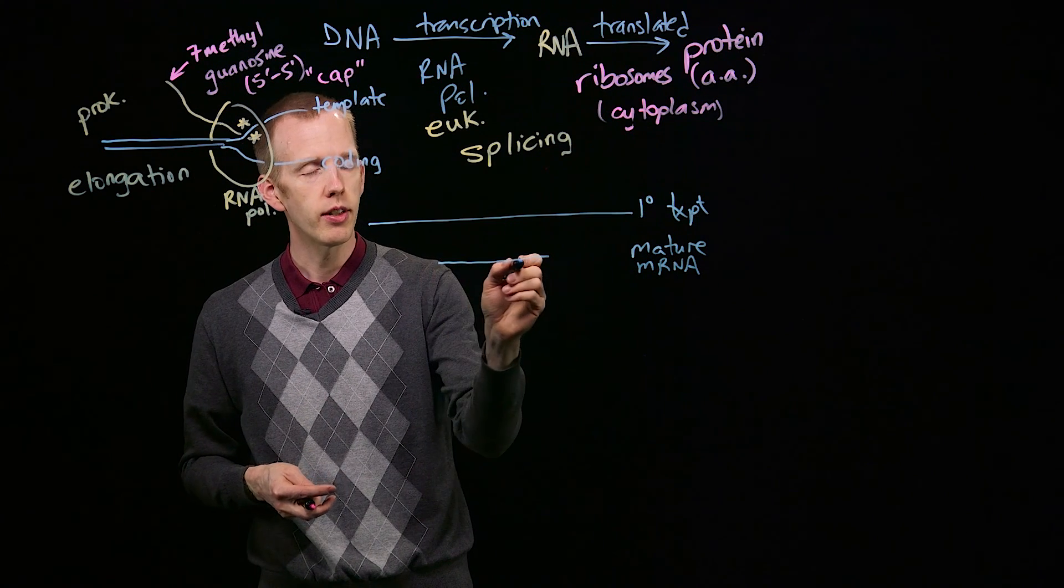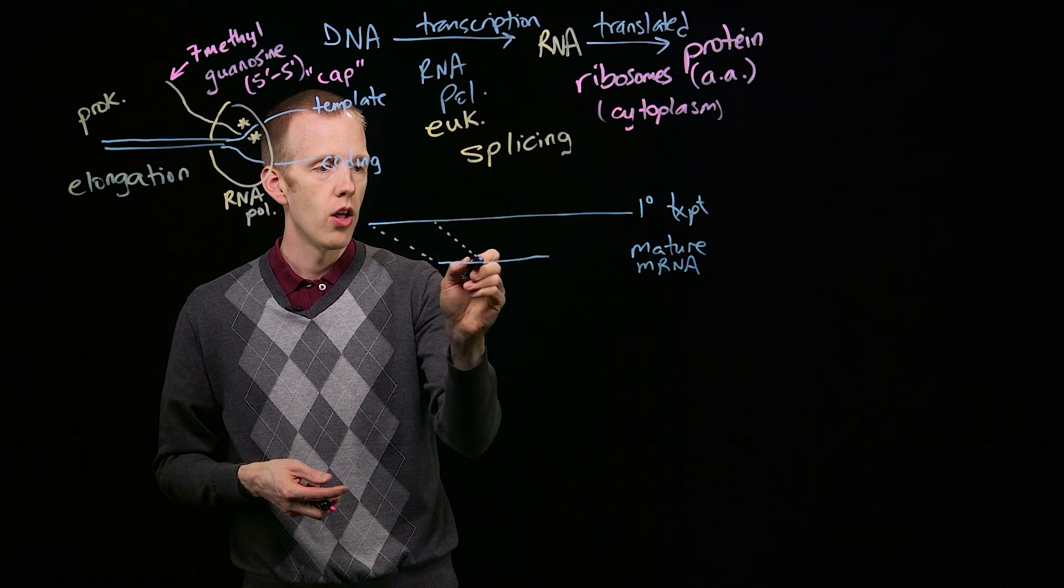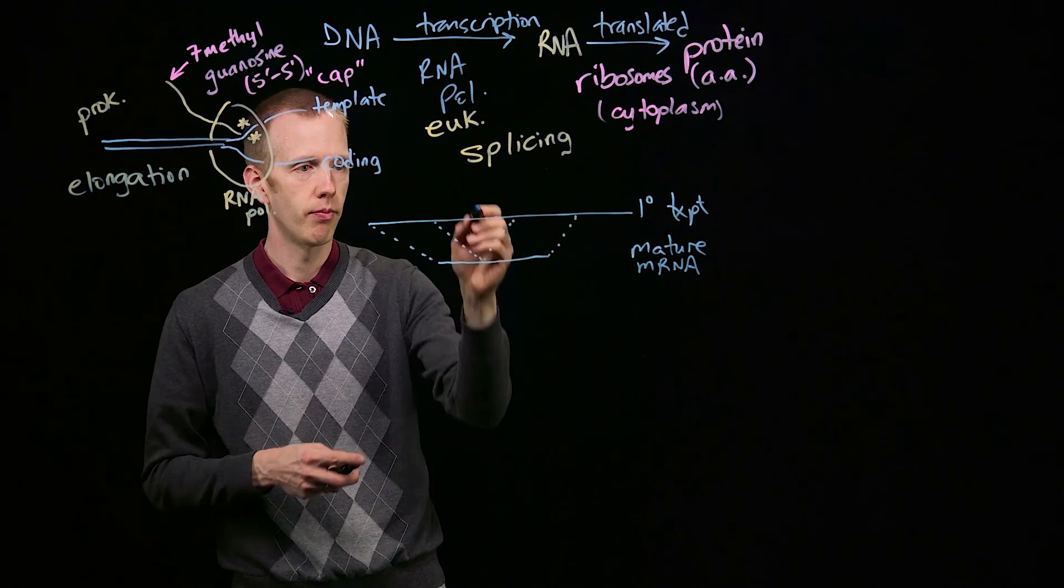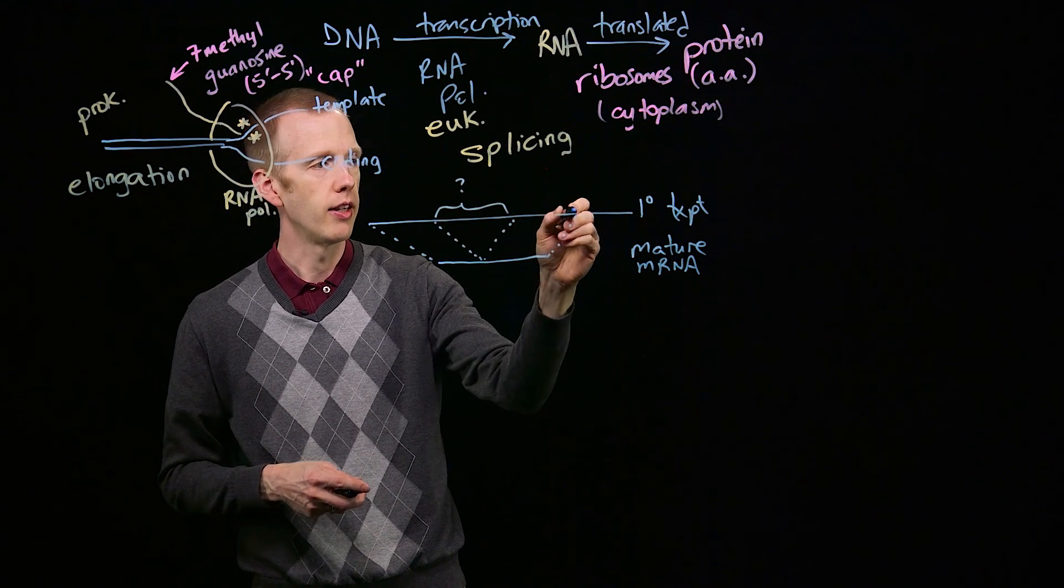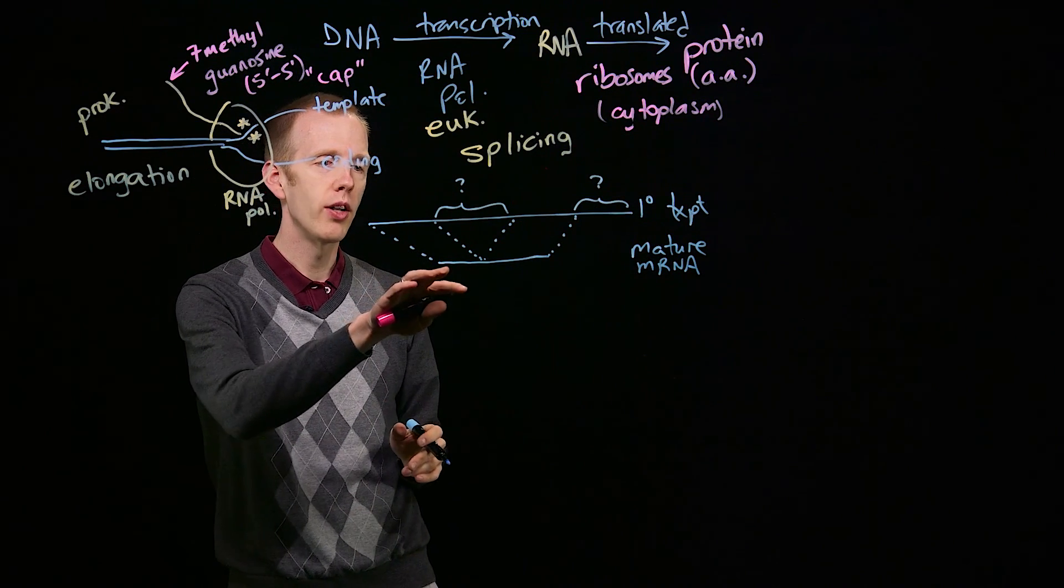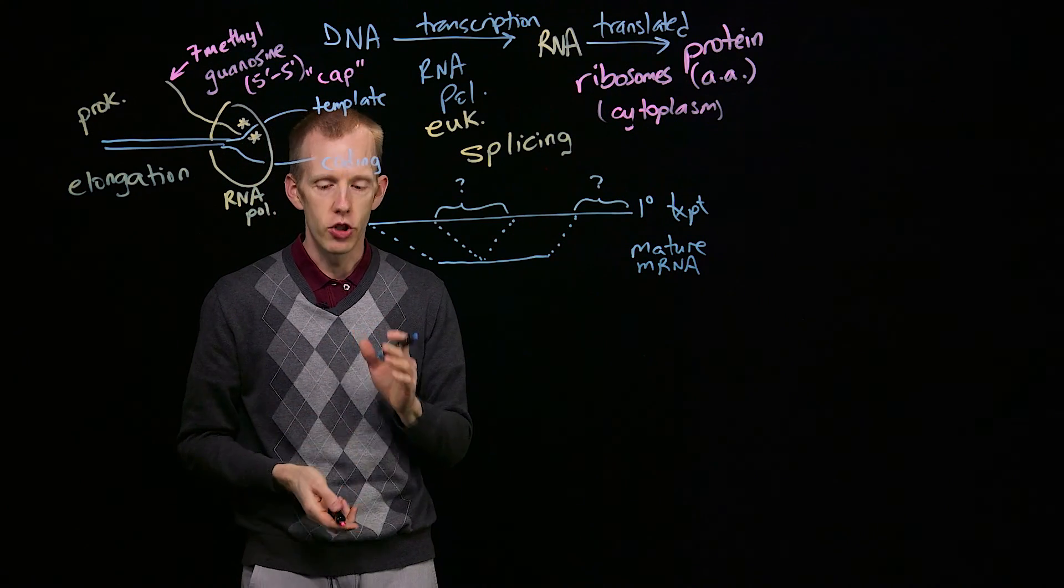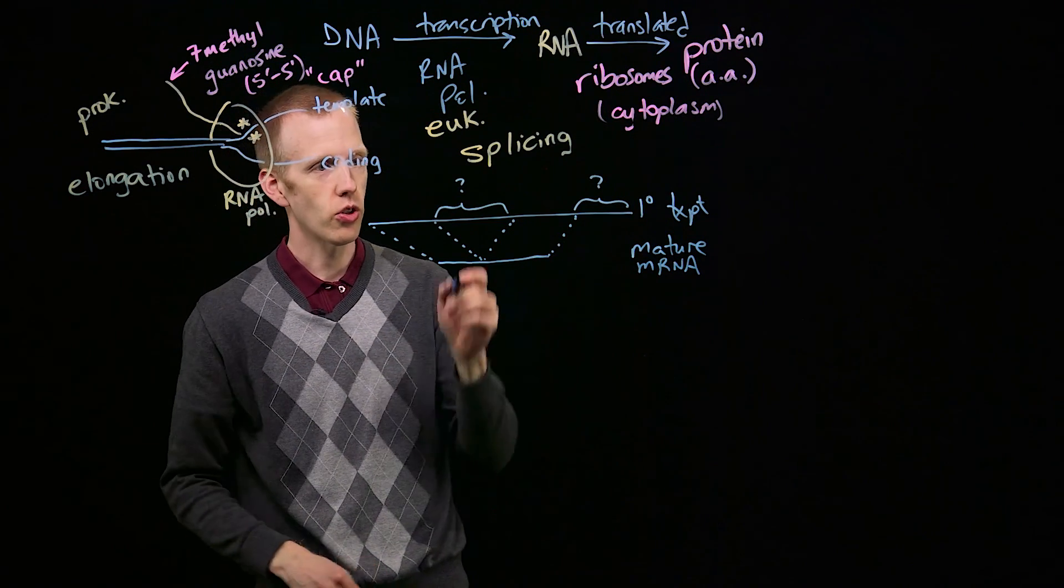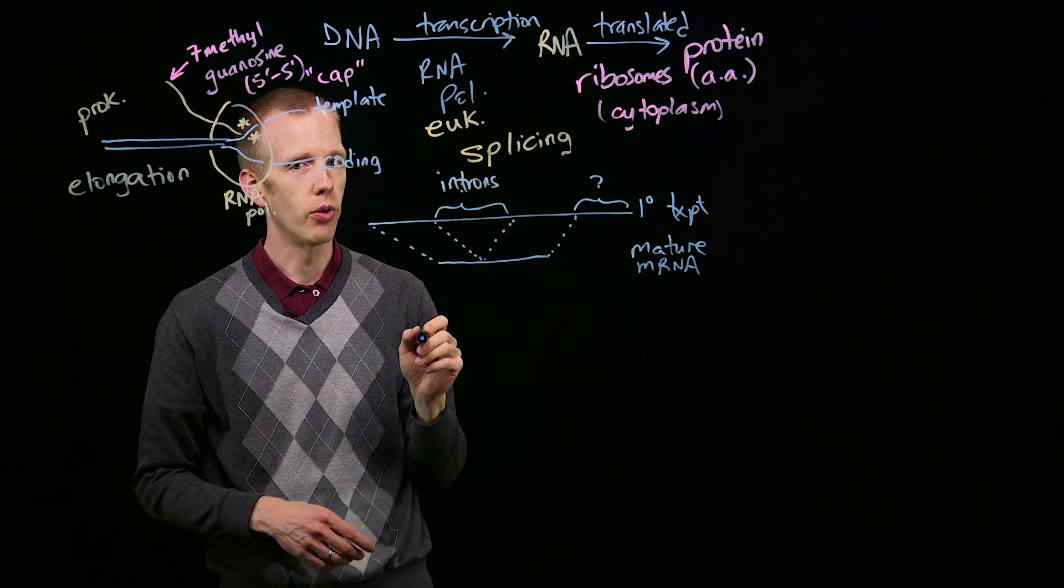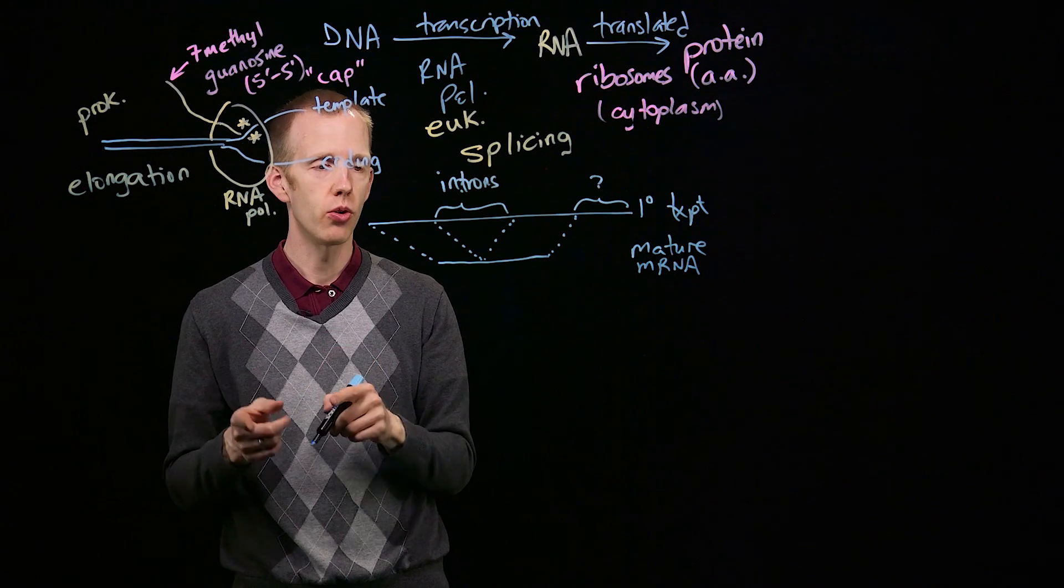And if you looked at the DNA sequence or the RNA sequence, they could see that there were parts of the primary transcript, like here and here, that weren't found in the same transcript once it moved from the nucleus into the cytoplasm.